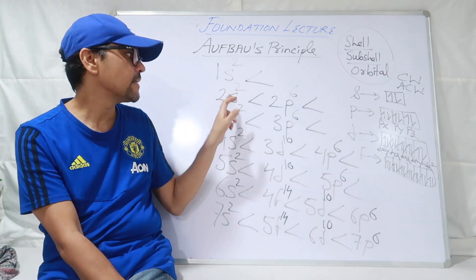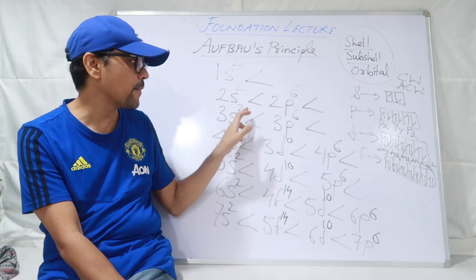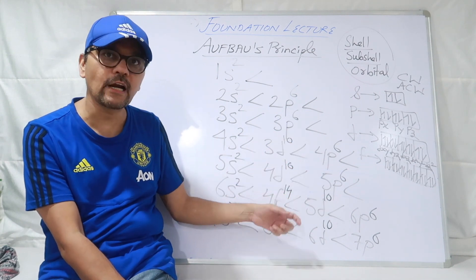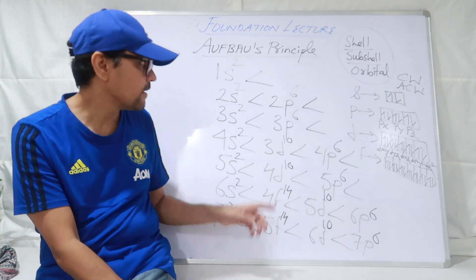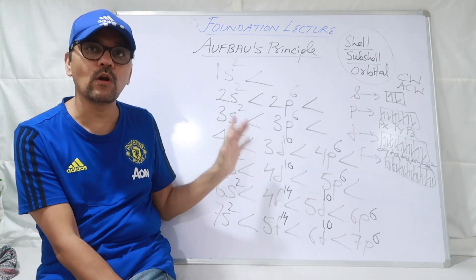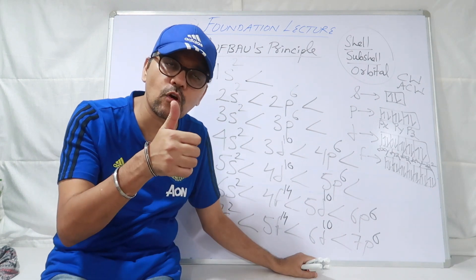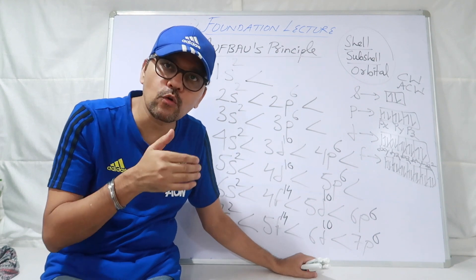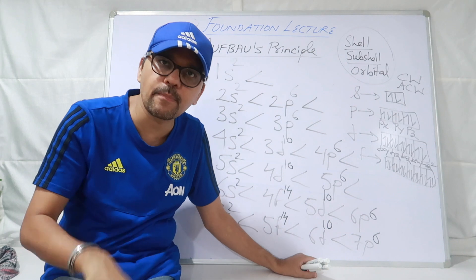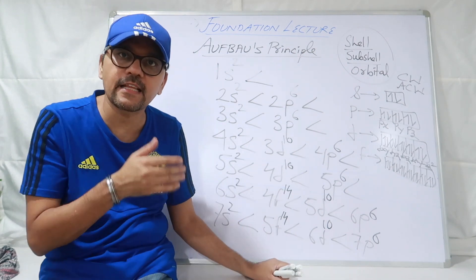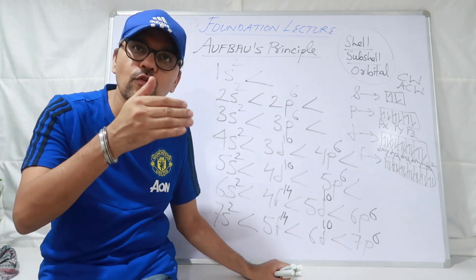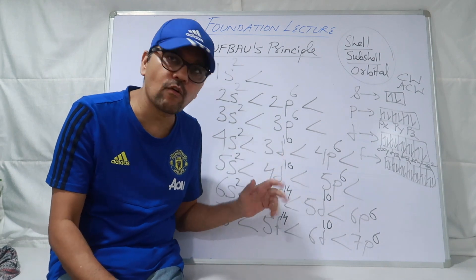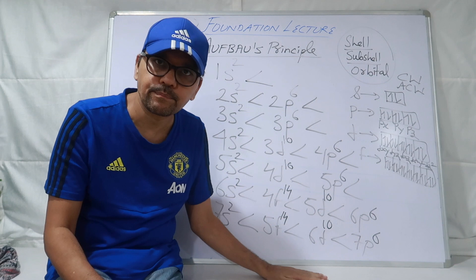2nd period mein 8 hote hain: 2+6=8. 3rd mein bhi 8 hote hain: 2+6=8. Phir count karoge 18, phir 32. 3S2, 3P6 is 3rd period, to 2nd aur 3rd same hai. Phir 4th aur 5th ek jaise hain. 4S2, 3D10, 4P6; 5S2, 4D10, 5P6 — beech mein 3D kyun aaya, 4D kyun aaya, 5D kyun aaya — woh baad mein bataunga, but you have to know this very well. Ek baar aapko yaad ho gaya to aapko yeh bhi malum pad gaya ki kis period mein kitne elements hain.